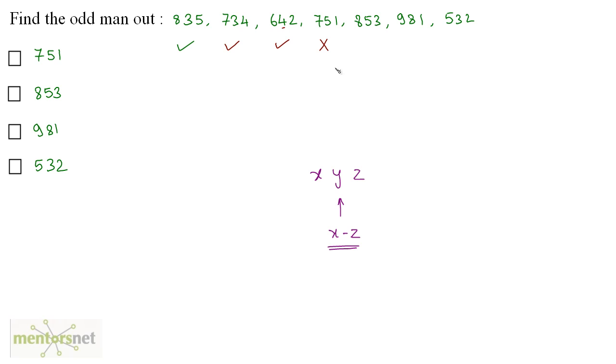So this is the odd man out. Rest of the numbers, they follow the same rule. 8 minus 3 is 5. 9 minus 1 is 8. 5 minus 2 is 3. So 751 is the odd man out. Option A is the correct answer.